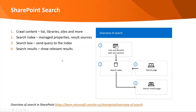Here's an overview of search in SharePoint. We have the crawler, which indexes all lists, libraries, sites, and more like site columns. When you create list columns they become crawled properties; when you create site columns they automatically become managed properties in the search index. Also available are result sources that you can configure in your search admin center in M365. The user submits a query on a search page, which is sent to the search index, and results are displayed via a search result page or web part.